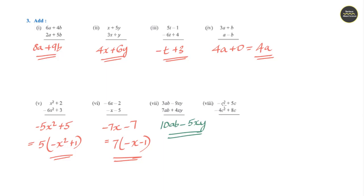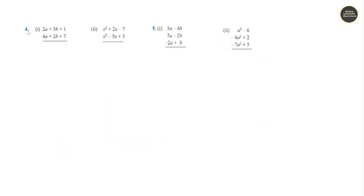Question 8: minus c, c square plus 4c square gives 5c square; 5c plus 8c gives 13c.